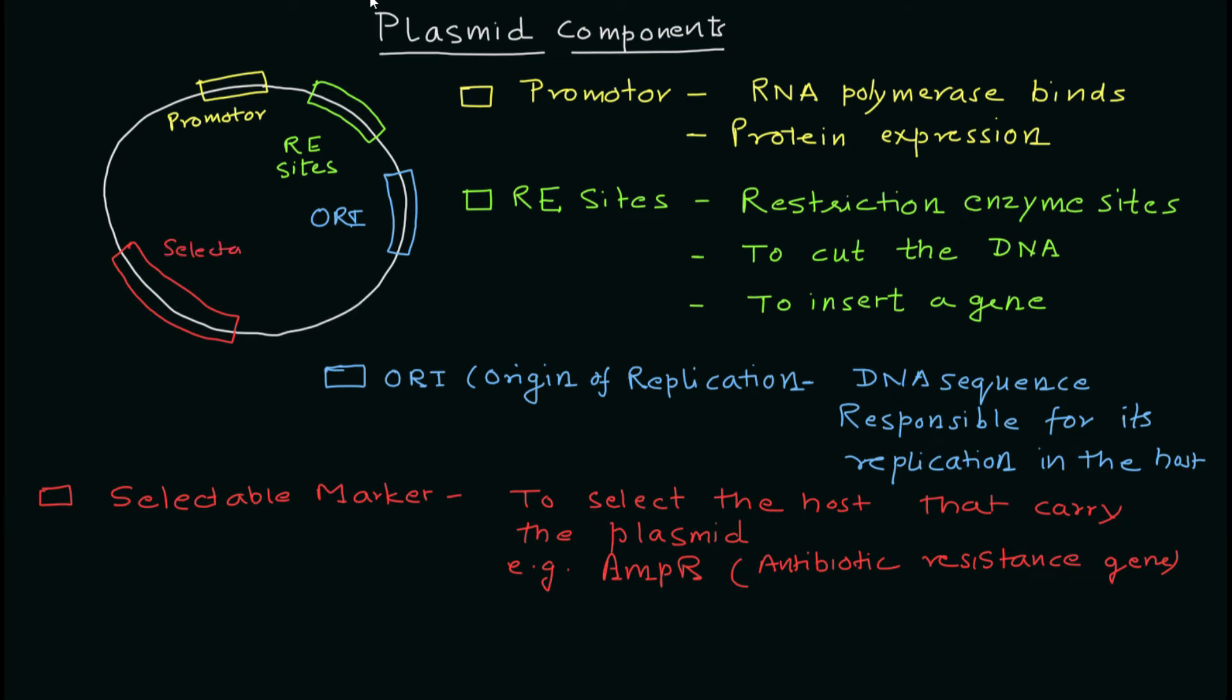We have ORI, we have the selectable marker region, and we also have the Lac Z region. Lac Z allows the host to produce beta-galactosidase protein, an enzyme responsible for blue-green colored colonies on media containing X-gal.